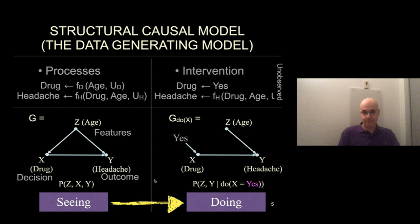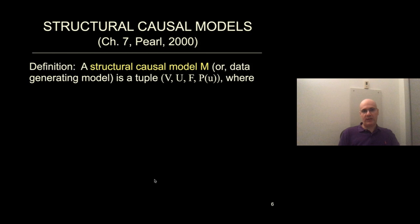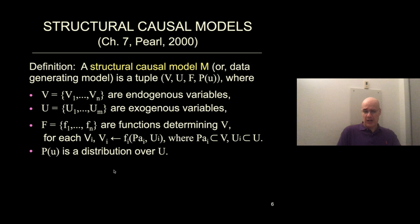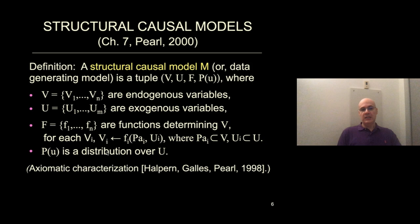We can generalize this idea and define the structural causal model — this is chapter one of Pearl's causality book from 2000. We have a set of observable or endogenous variables like age, drug, or headache; a set of exogenous or unobserved variables such as U sub D and U sub H; and a collection of mechanisms — F sub D or F sub H — for each observed variable. There is also a probability P of U over the exogenous variables, summarizing conditions outside the system. We understand very well how these systems work thanks to solid foundational work by Halpern, Galles, and Pearl.